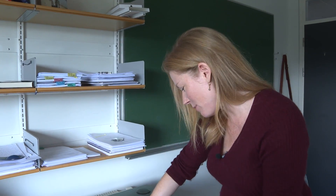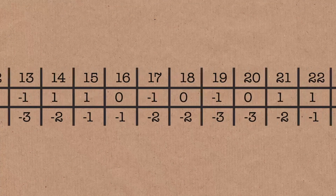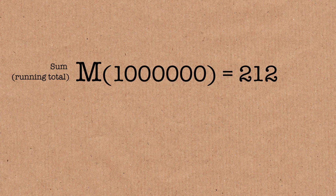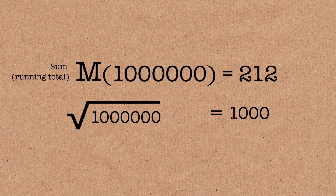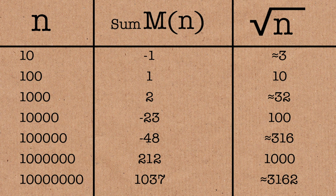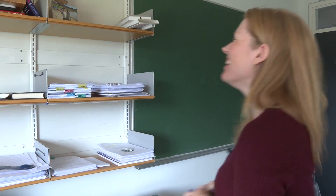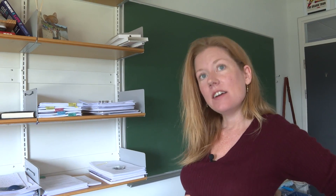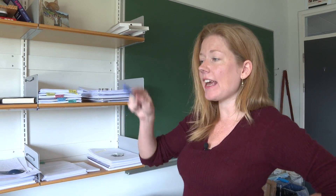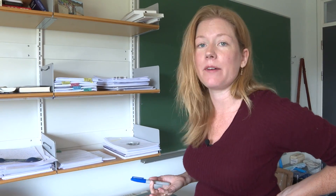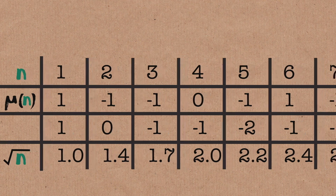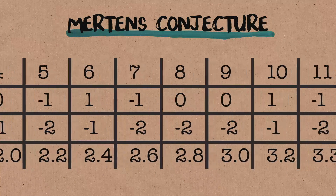So if I go through this process of adding minus 1s and plus 1s and stop at a million, the thought is whatever number I get, it's between minus 1,000 and positive 1,000 — the square root of a million. It could be either side of zero, and in fact it is known that it switches back and forth infinitely often. This sum is called Mertens function, and the conjecture that it stays within the square root bound is known as Mertens conjecture.